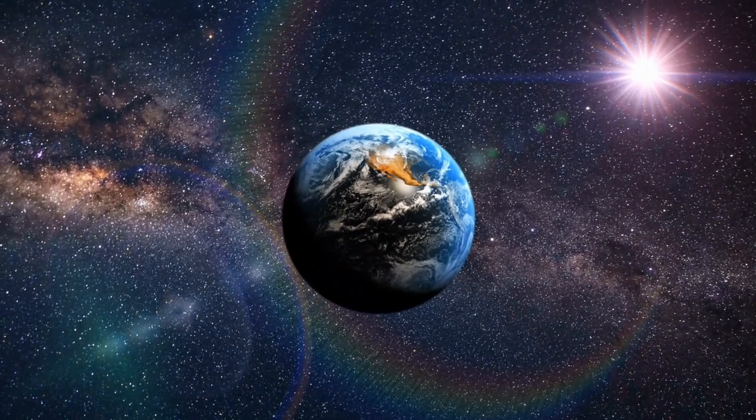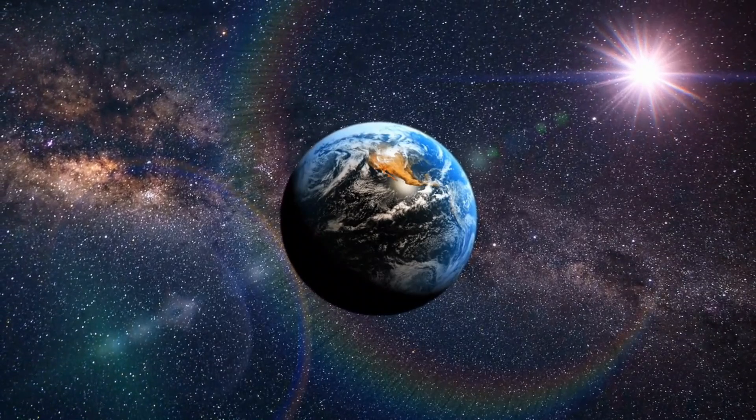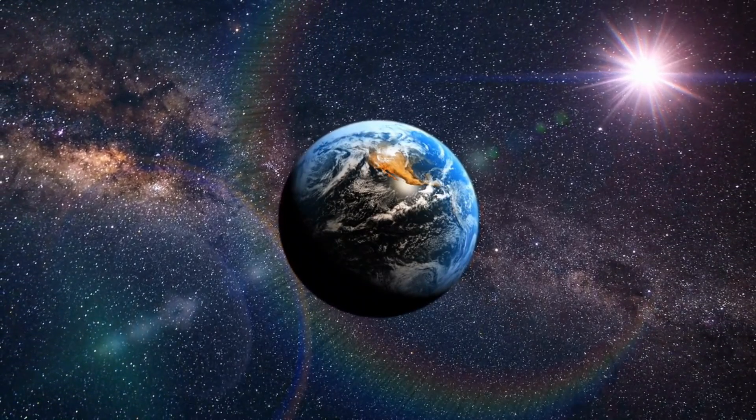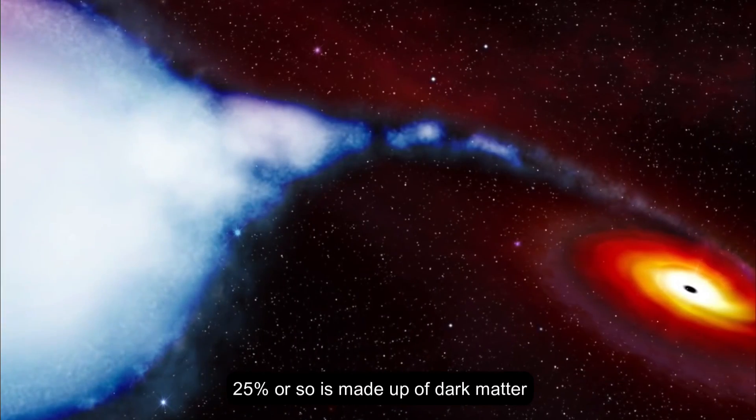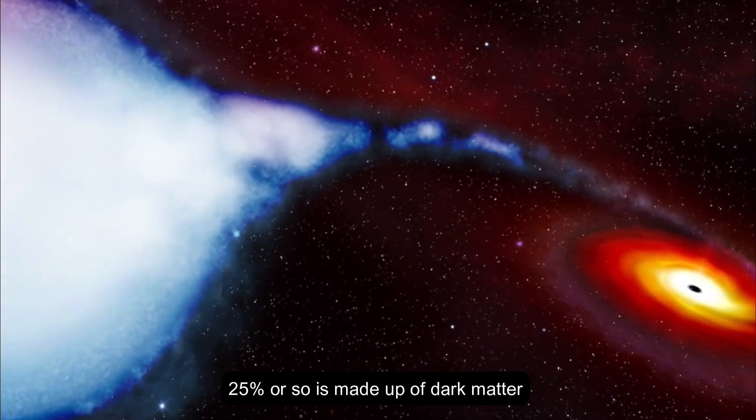All visible matter that we can see, including humanity, the Earth, and the stars and the galaxies account for nearly 5% of the total. The remaining 25% or so is made up of dark matter.